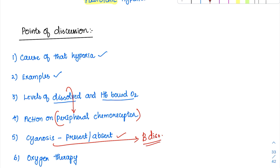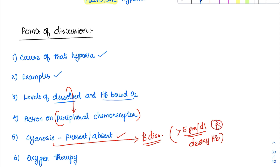For cyanosis, the deoxyhemoglobin level must be more than 5 grams per deciliter — this is very important. For a little deoxyhemoglobin, cyanosis will not happen. Finally, we will discuss whether oxygen therapy will be helpful in that particular type of hypoxia.